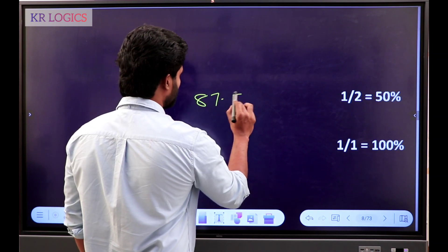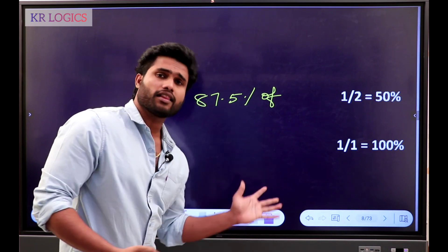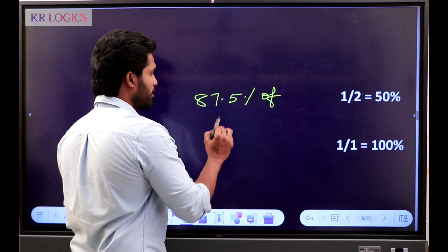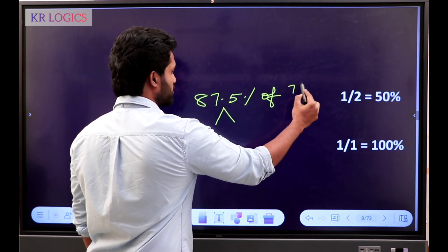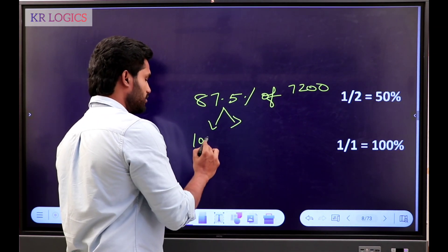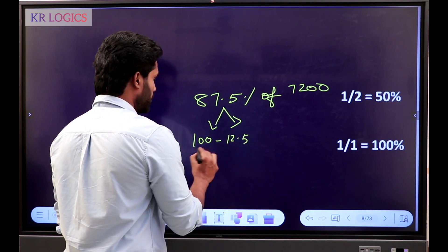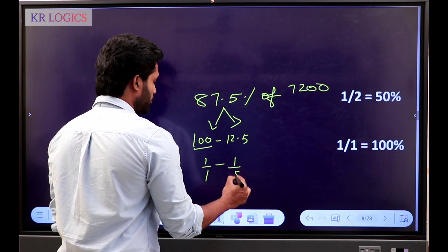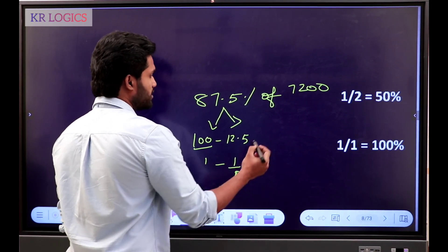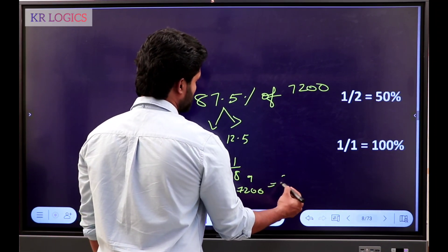87.5 percentage — there is value simplification. What do we do? We split: 100 minus 12.5. What is 100 percentage? 1 by 1. 12.5 is 1 by 8. This is LCM: 7 by 8. So 7 by 8 of 7,200. The answer is 6,300. Clear guys.